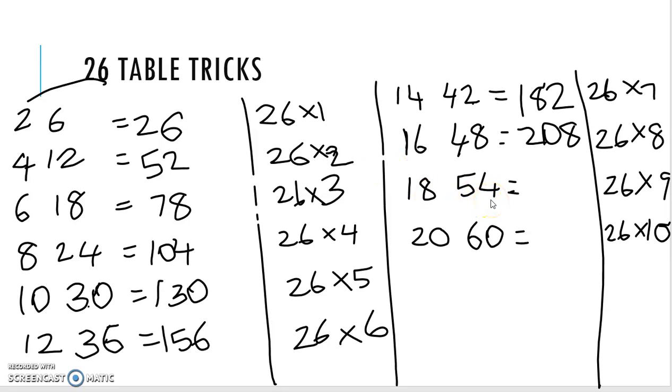Then we have to write this 4. Then 8, 8 plus 5, 13. The balance 1, 1 plus 1, 2. 234.